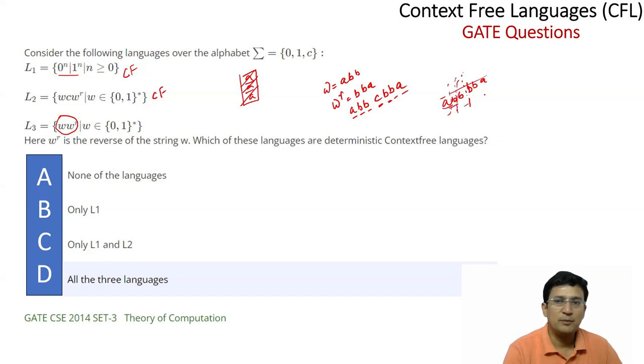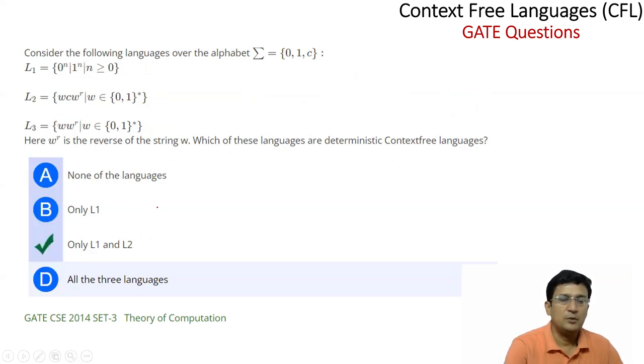There will be many conditions which may arise. Based on that we can say that L3 is context free but it is not deterministic context free. The question asks which are deterministic context free. According to me, L1 and L2 are deterministic context free but others are not. This is the correct option.